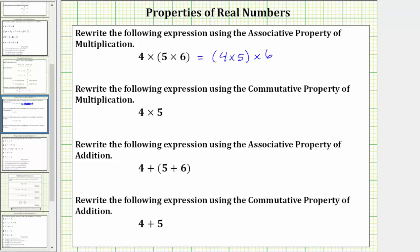We simplify inside the parentheses first. On the left, five times six is 30, so the left side simplifies to four times 30. On the right, we simplify four times five first, which is 20, so the right side simplifies to 20 times six. Four times 30 equals 120, and so does 20 times six.